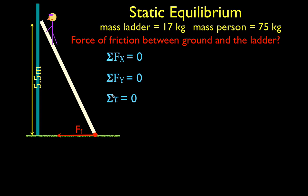In order to sum up the forces and the torques we should draw in the forces first. There is the force from the person — the weight of the person on the ladder. There is the weight from the ladder, which we draw right at the center because we assume the ladder has uniform mass, so we draw it right at the center of mass. These two forces are acting in the negative direction. There must be some force acting in the opposite direction because the ladder is not falling through the ground surface, so these two forces are in equilibrium with the normal force in the y direction.